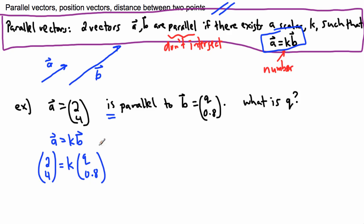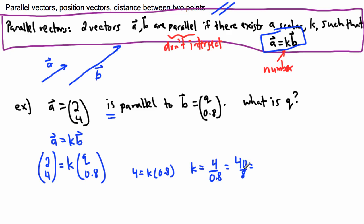So I write the equation: 4 equals K times 0.8. To solve for K, I use algebra — divide both sides by 0.8, giving 4 divided by 0.8. You don't need a calculator: multiply both numerator and denominator by 10 to get 40 over 8. And 40 divided by 8 is just 5. So K equals 5.